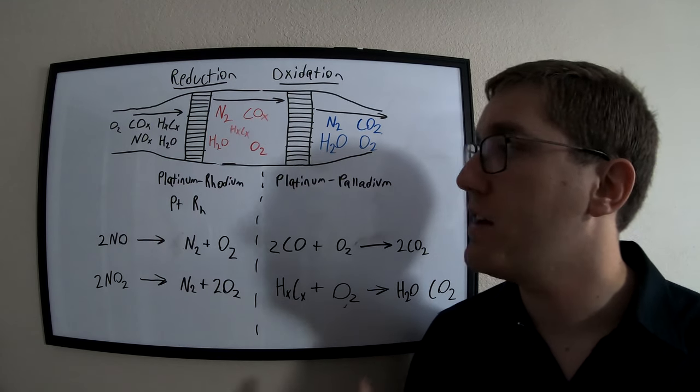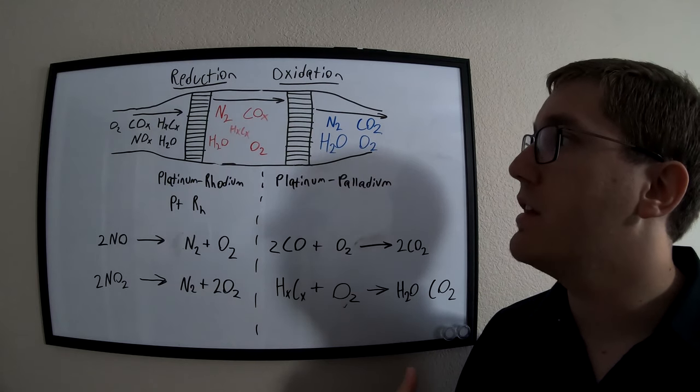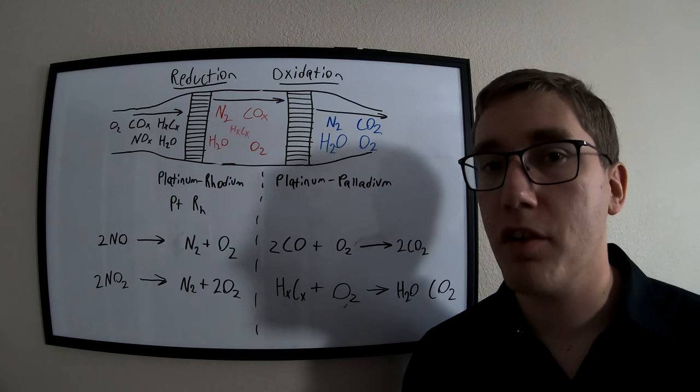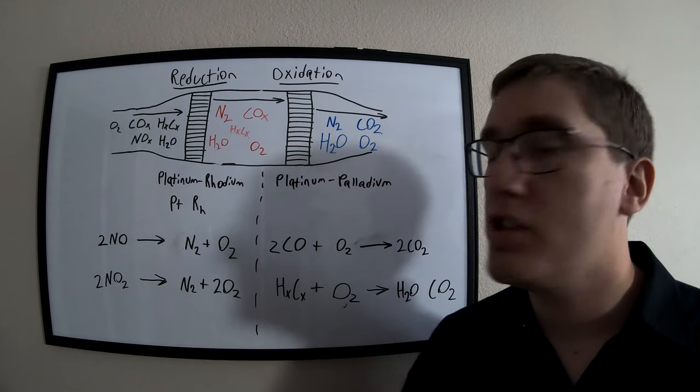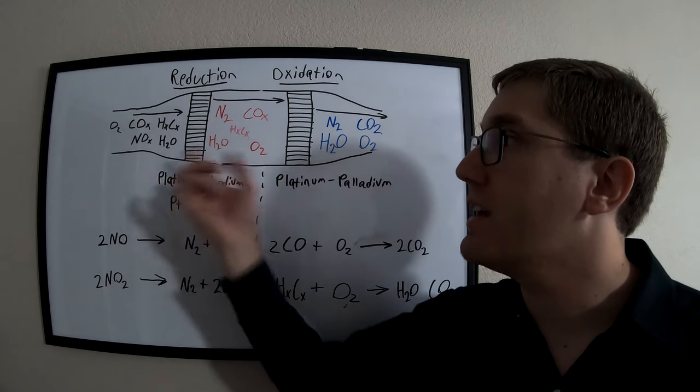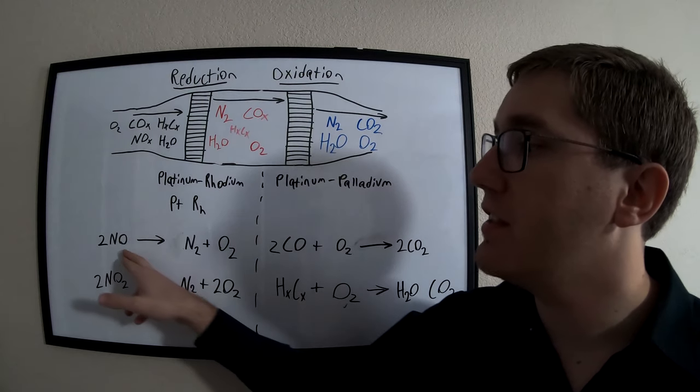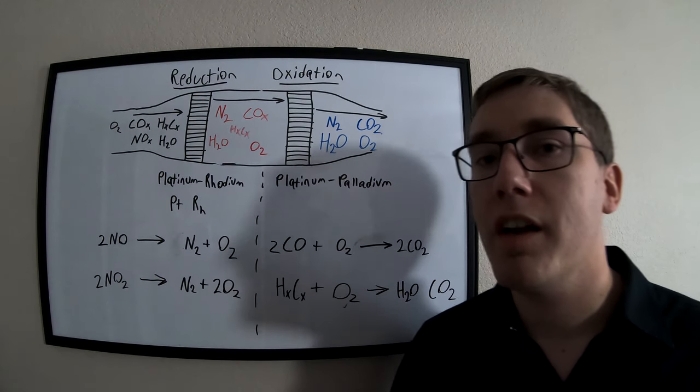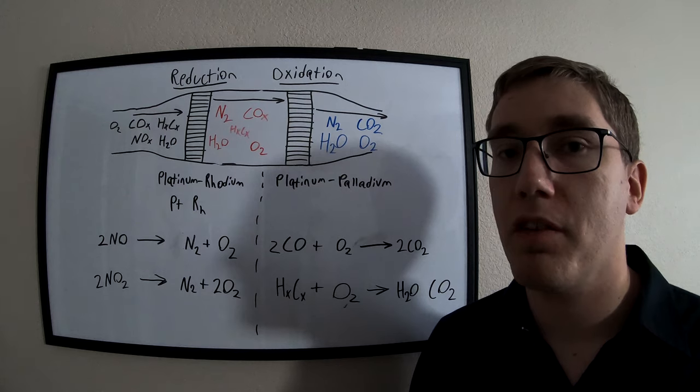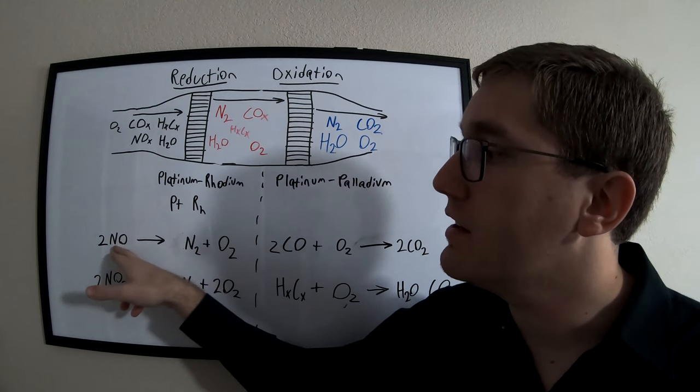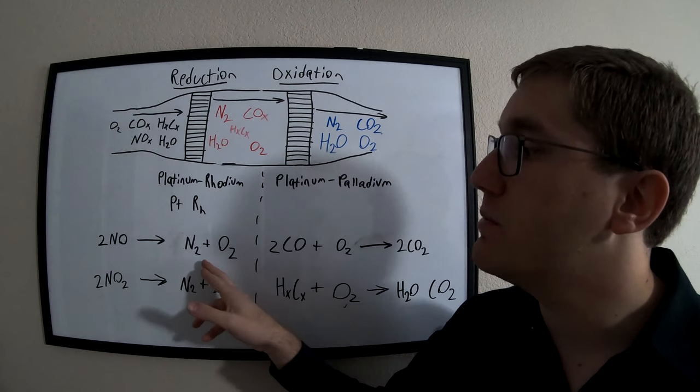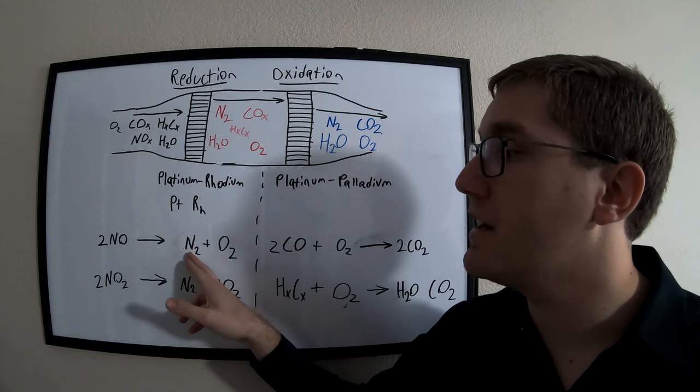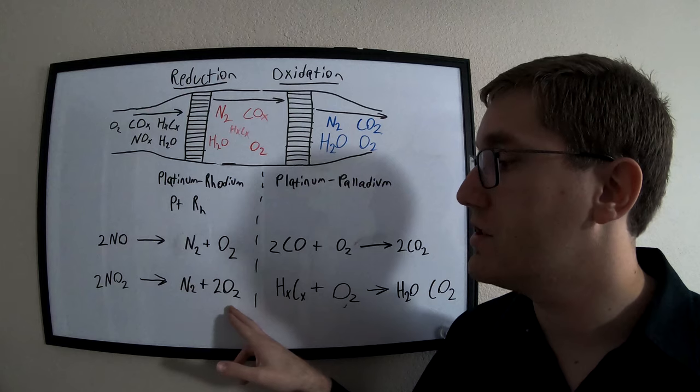As it passes through the platinum rhodium material, the mesh has a lot of surface area, which allows certain nitrogen oxides to be able to combine with the catalyst surface. What happens is the nitrogen wants to combine with the platinum rhodium on the surface, and this separates the nitrogen molecules from the oxygen and allows it to be recombined as simply nitrogen gas and oxygen gas.